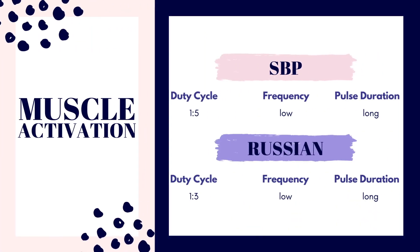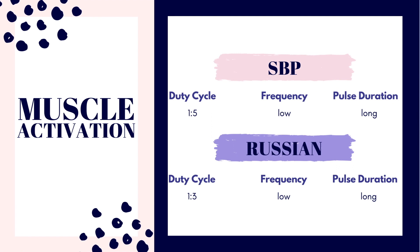For e-STEM for true muscle activation, it's going to be symmetrical biphasic or Russian. For symmetrical biphasic, the frequency is on the lower side, like 30 to 80, with a pulse duration that is long, so greater than 200. The longer pulse duration allows you to get to that motor threshold quickly. The duty cycle can be either 1 to 3 or 1 to 5 for both of these. Duty cycle is the amount of time that the unit is on versus off. An example of 1 to 5 would be 2 seconds on, 10 seconds off. An example of 1 to 3 is 2 seconds on, 6 seconds off. Basically, the longer the time is off, the longer the muscle has to recover.